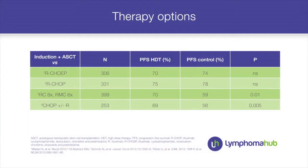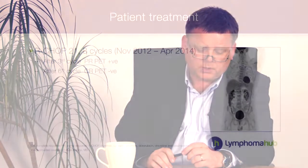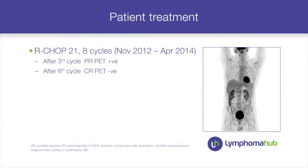Regarding high-dose treatment with stem cell transplantation, we now have four randomized trials — two showed an advantage of stem cell transplantation and two failed to show an improvement with SCT consolidation. We decided to treat the patient by the conventional approach with R-CHOP-21, scheduled for eight cycles.